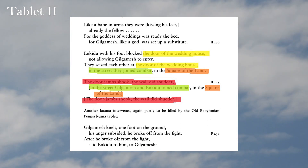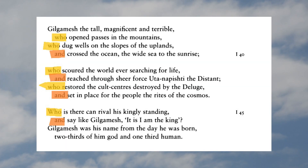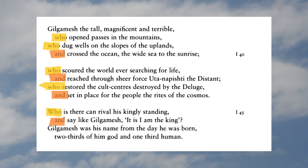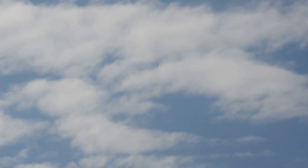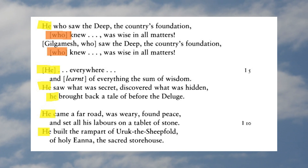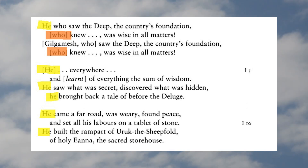They also use anaphora, which is a repeat of a word, very frequently as a way to continue and connect ideas. Even in the beginning, they're using anaphora when they say 'he, he, he,' really focusing attention on Gilgamesh.